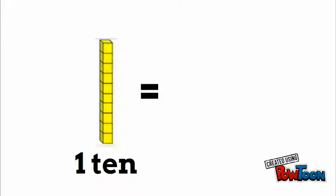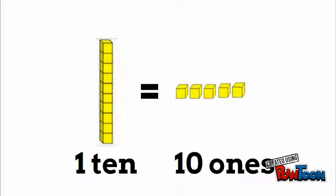Here's where the whole idea of unbundling comes from. If I have one 10, I can unbundle it into 10 ones. So we see 10 ones and one 10 are both equal to each other and we can use that concept when we're subtracting.